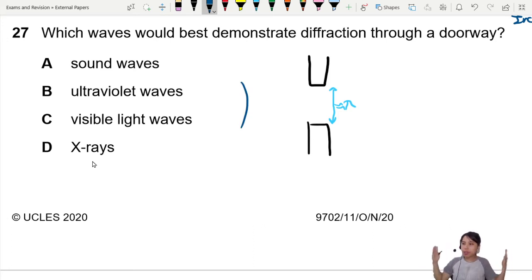A doorway is pretty big. It could fit a human inside. If your doorway is, say, 1 meter, wavelength should be about 1 meter. Roughly.